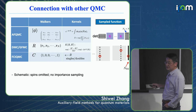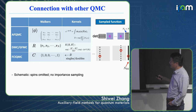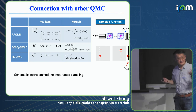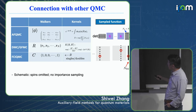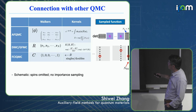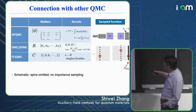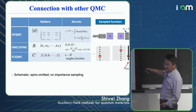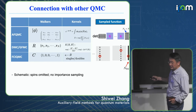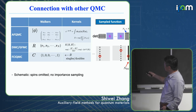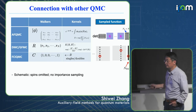Schematically, FCIQMC deals with a vector whose dimension is the Hilbert space size — 10^29 or something. When you sample, you pick one element, and you're working with the matrix from Hilbert space to Hilbert space. You sample where you could land and choose one, keep going. In DMC this is continuous, but the same language applies. In AFQMC you're working with matrices of size N_basis × N_electrons.